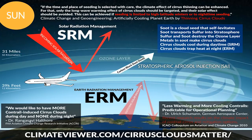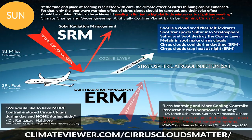I interviewed Dr. Rangasai Halthori from the FAA Aviation Climate Change Research Initiative, ACRI. I asked what Dr. Schumann meant by that, and he said: 'We would like to have more contrail-induced cirrus clouds — chemtrails — during the day and none during the night.' Between these two statements from doctors very involved in the planes-making-clouds business, they show intent: our plan is to make them all day long to cool the planet and hopefully get rid of them at night.